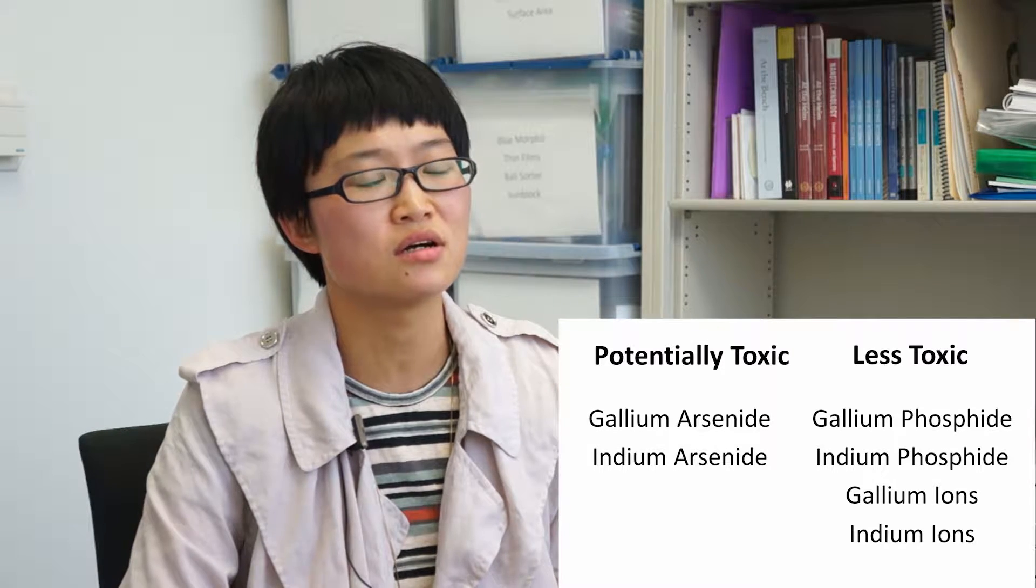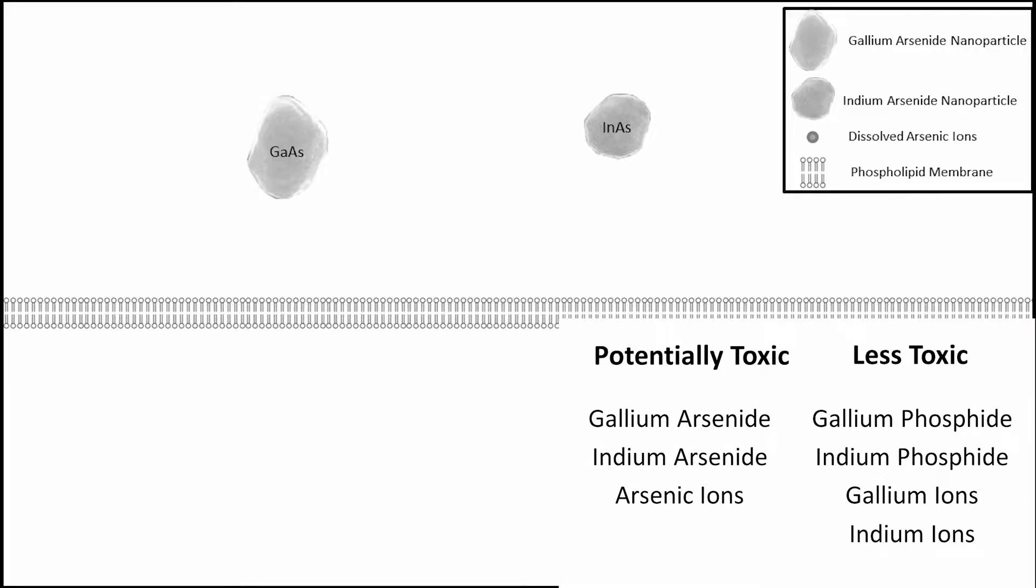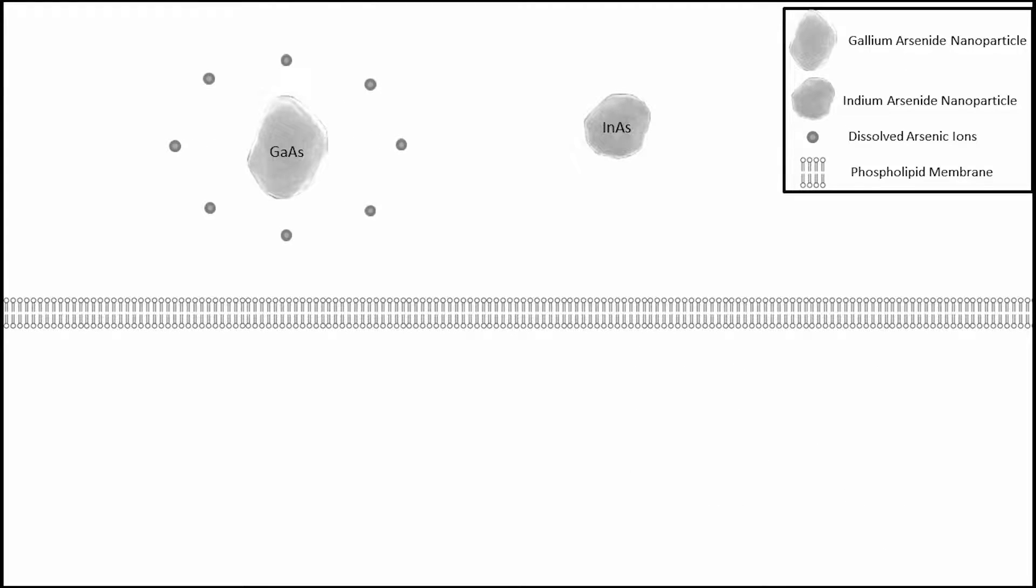suggesting that arsenic ions are the leading contributor to toxicity. The principal mechanism of 3-5 arsenide nanoparticle toxicity is due to the dissolving of the arsenic ions both inside and outside the cells.